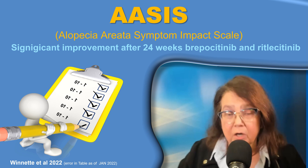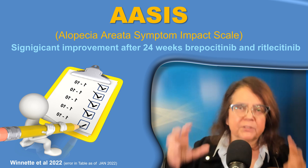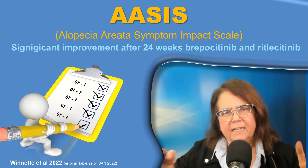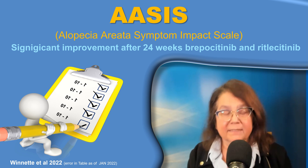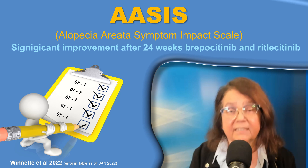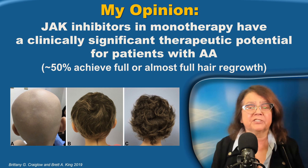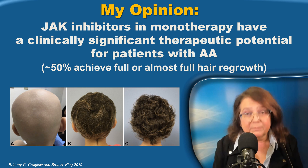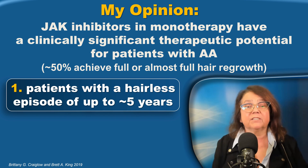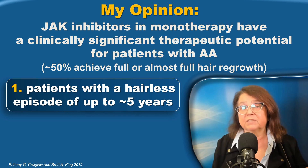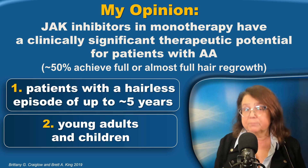There is a study I particularly like because it shows the patient's point of view — the Alopecia Areata Symptom Impact Scale. This is a survey filled out by the patient with questions related to the perception of hairlessness and the emotional impact of alopecia areata. JAK inhibitors have shown a significant positive impact on patients' lives. The two groups that will likely benefit most from JAK inhibitors are patients with a short episode of hair loss — not longer than approximately five years — and patients who are children and young adults, as they seem to respond best to therapy.